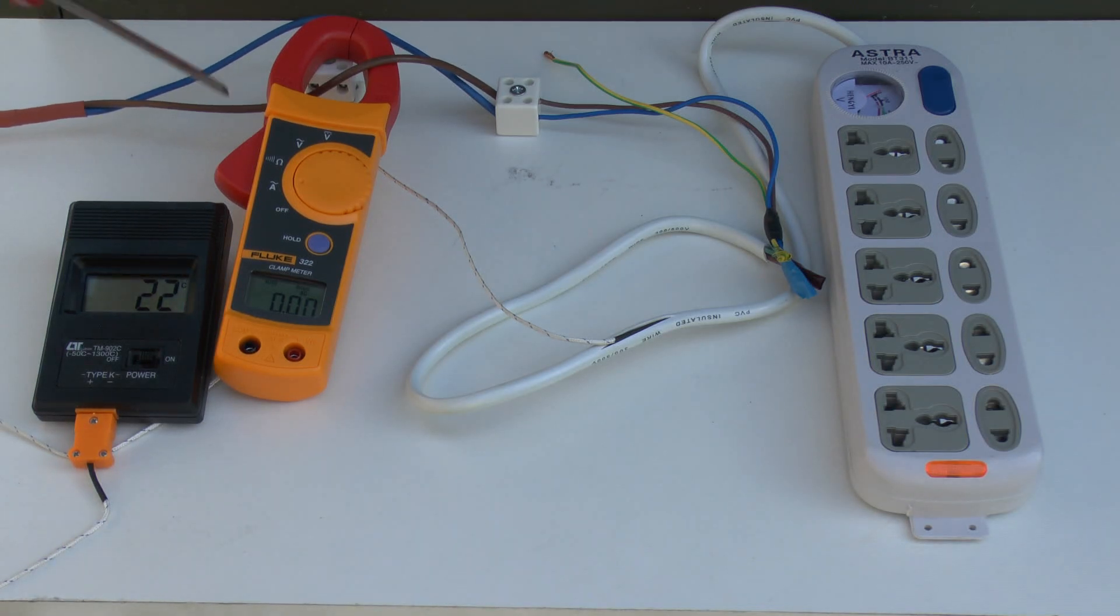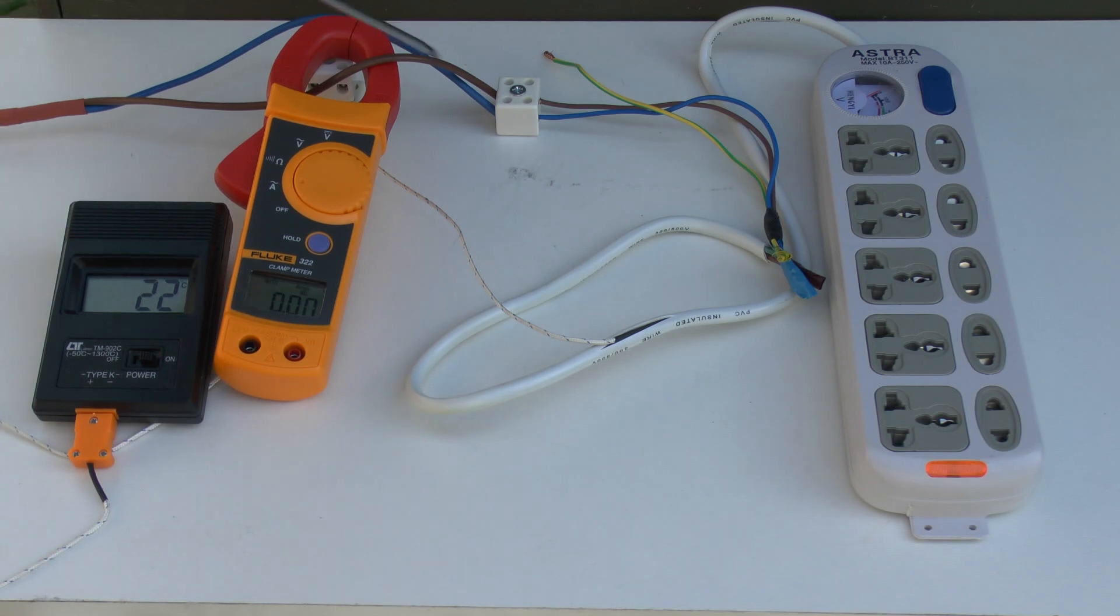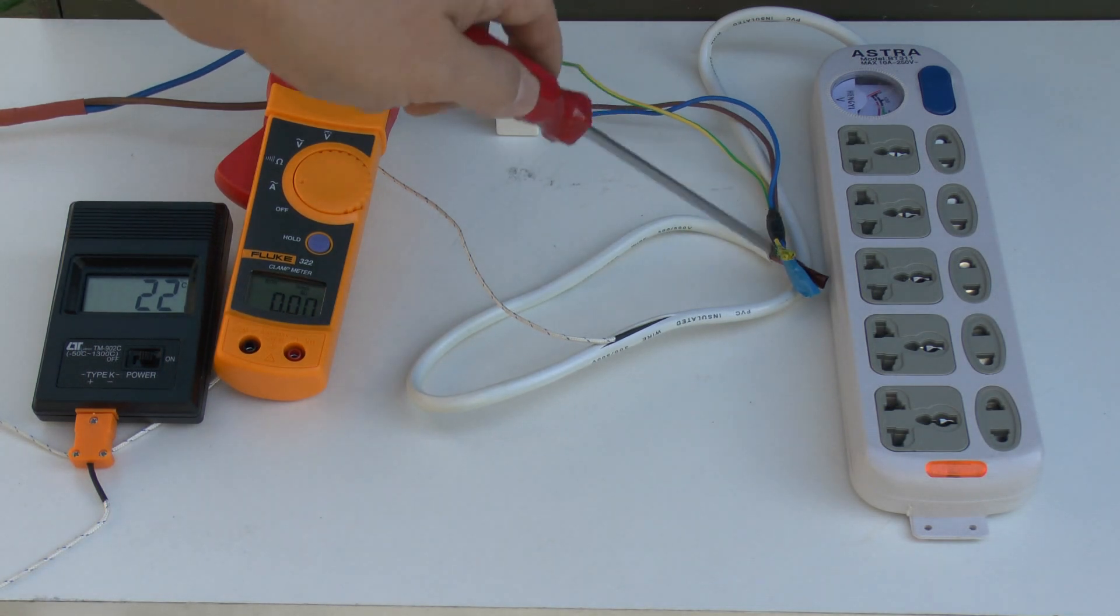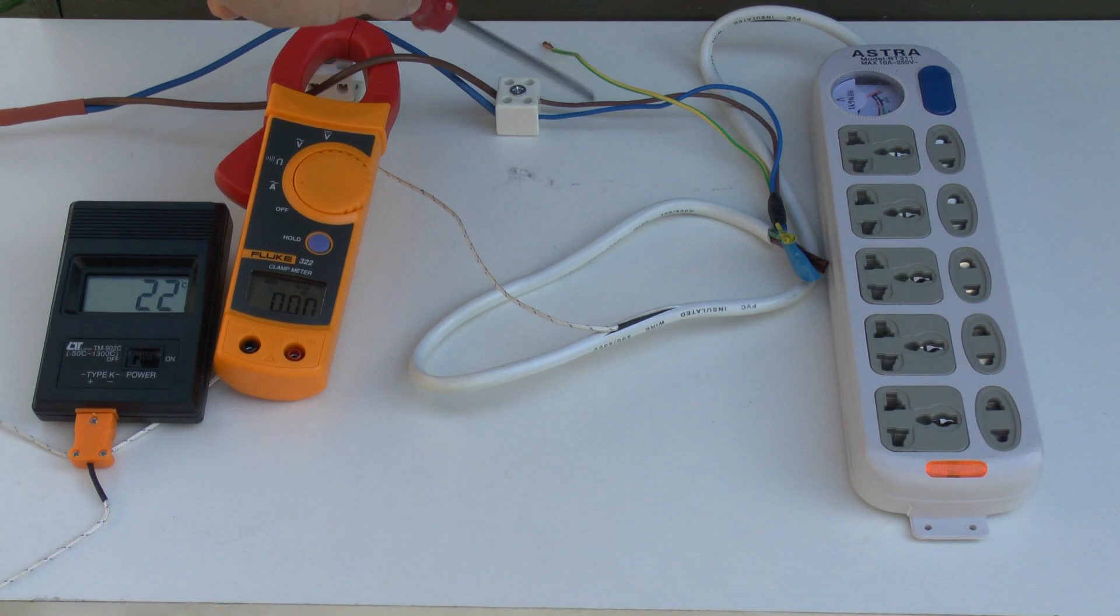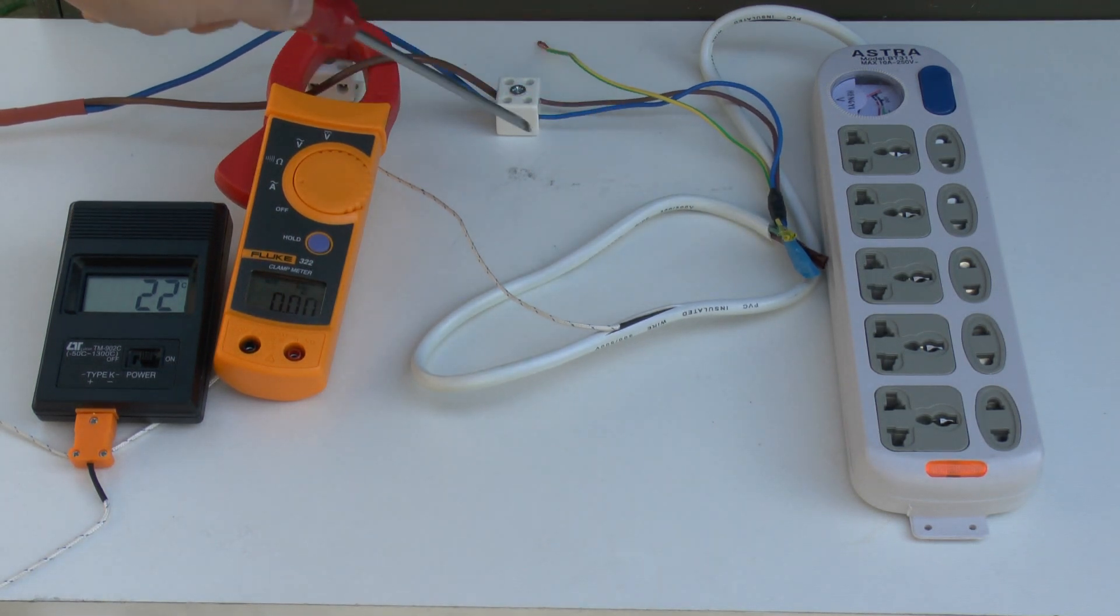Here's the test setup. We've got the mains coming in here via the clamp meter so we can display the current on the display there. It goes to this ceramic block and then I've had to solder on some extra wires because it was impossible to get the original flex to stay in the terminal.